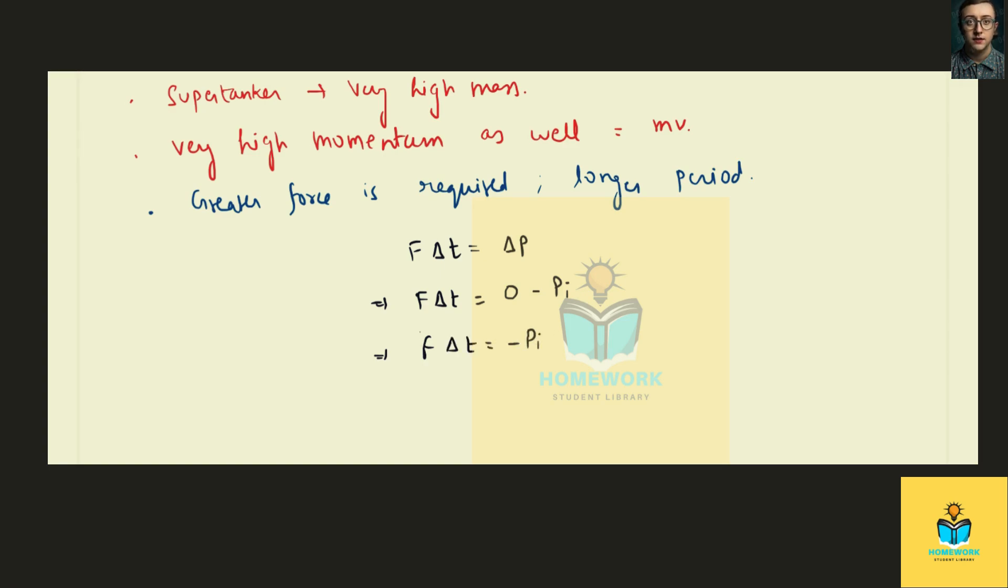So it means that the product of force and time should be high, which means that each individually has to be high enough so that the product meets the momentum which is already high. Because of this reason, it is very difficult to stop or turn a super tanker. Thank you.